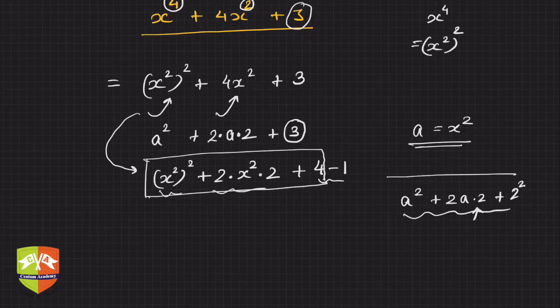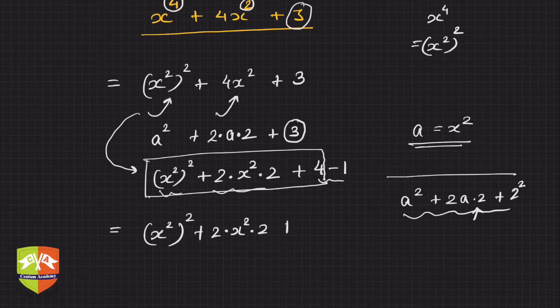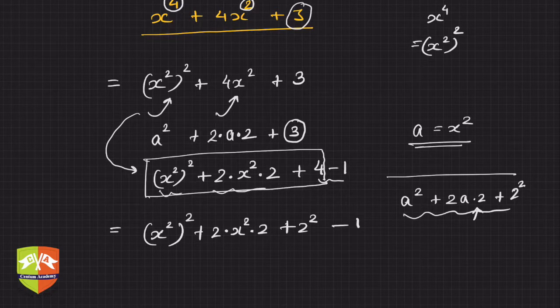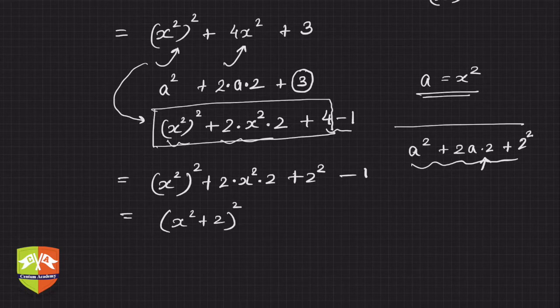What is this? This is x square squared plus 2 times x square times 2 plus 2 square, and then minus 1. This minus 1 will tell you how to use it later on, but right now it's nothing but (x square plus 2) whole squared minus 1.